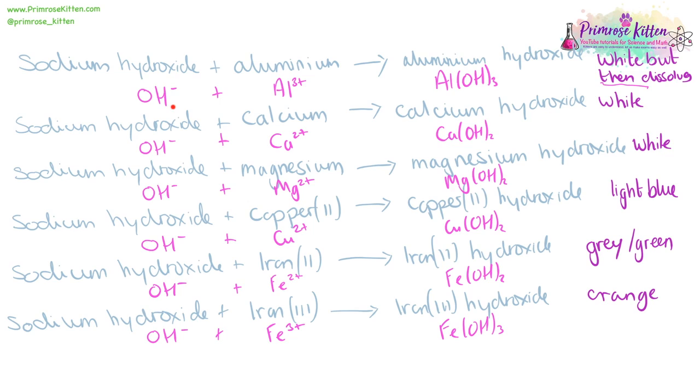For the ionic equations, we have our hydroxide ion and then our metal ions, and you are expected to know all of these. Then you just need to make sure your number of negative hydroxide ions is equal to the number of positive ions.